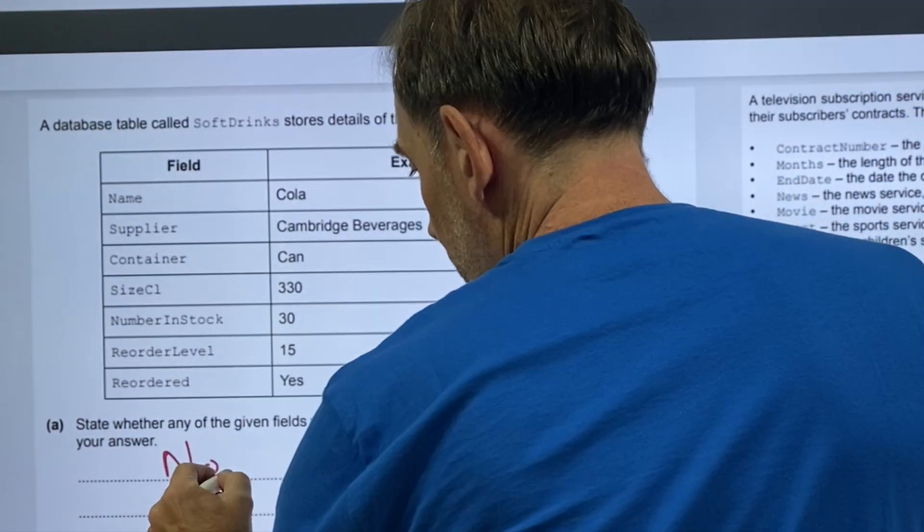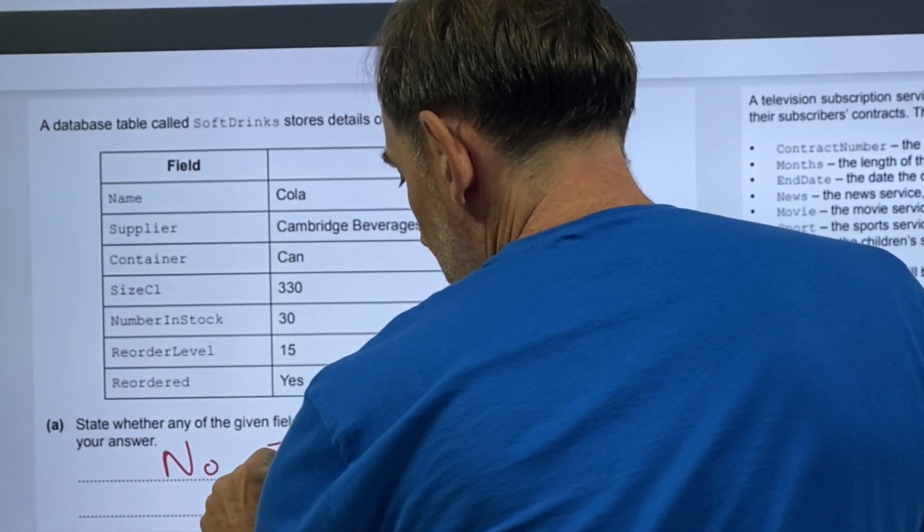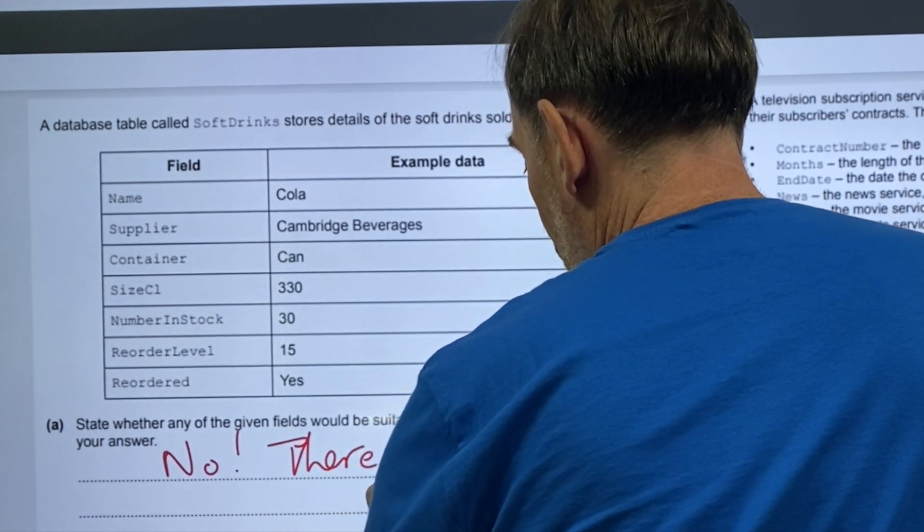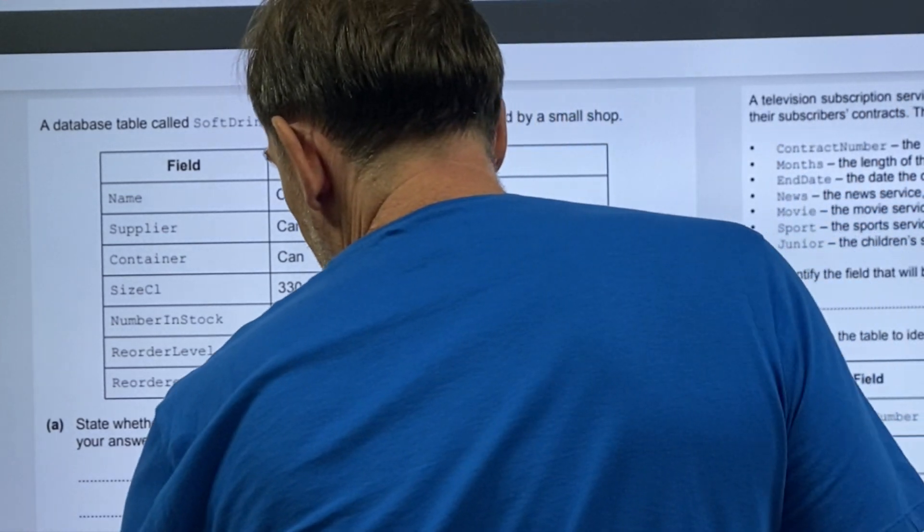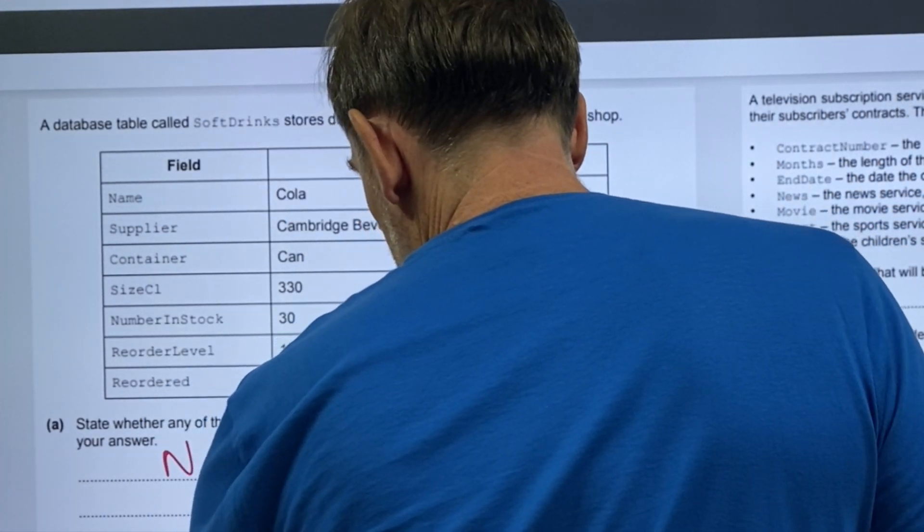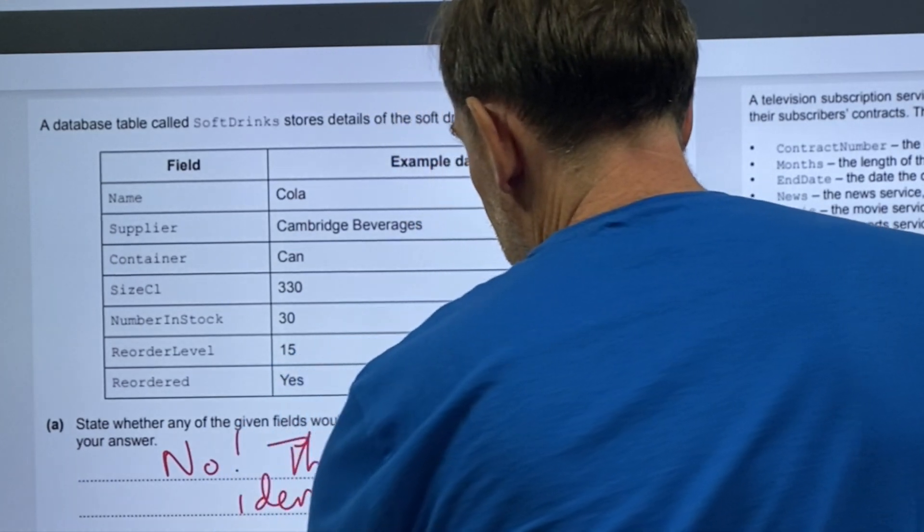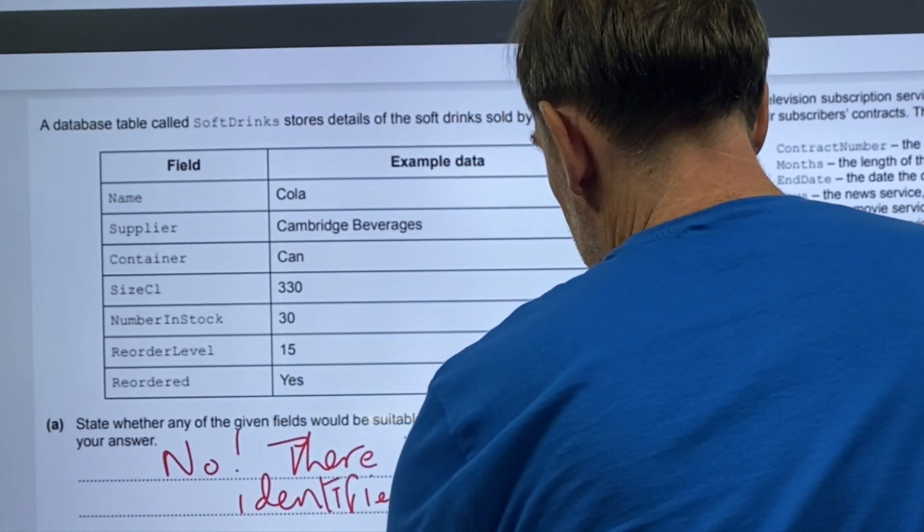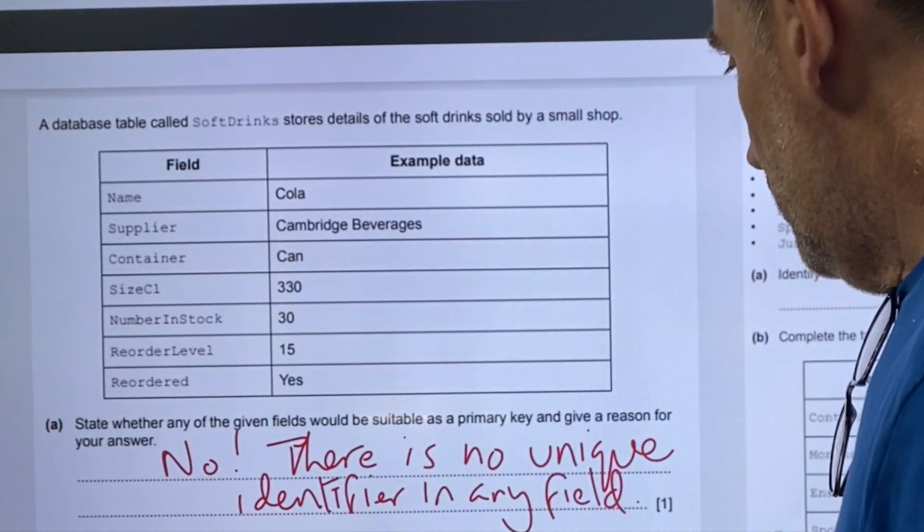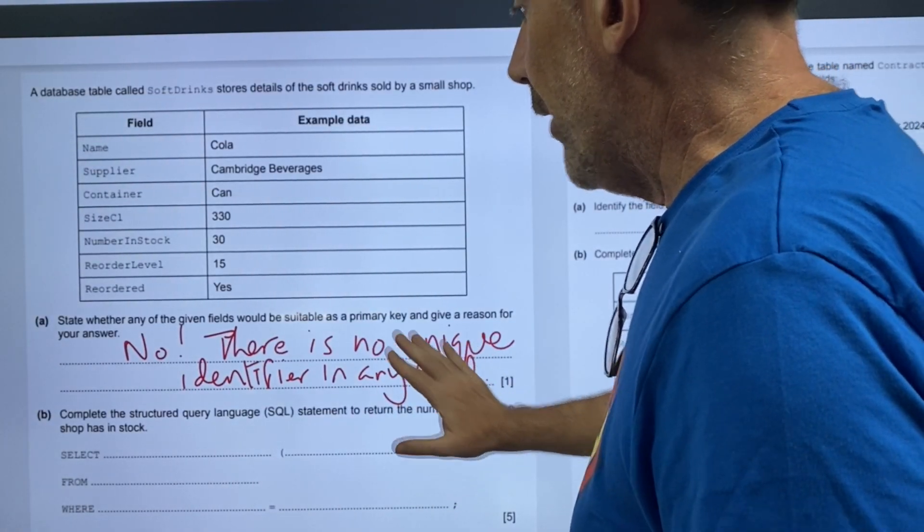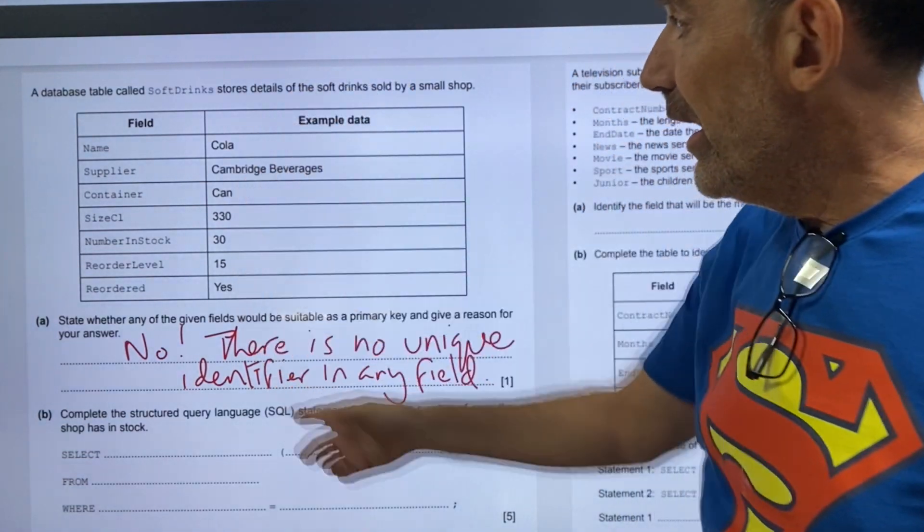Therefore, if no, there is no unique identifier in any field. That would give us one mark. No, there is no unique identifier in any of those fields.